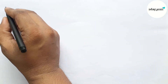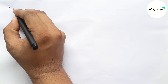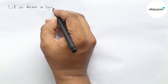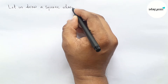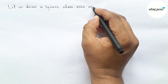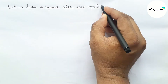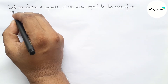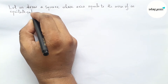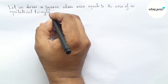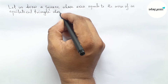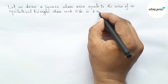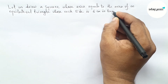Hi everyone, welcome to Essay Share Classes. Today in this video, let us draw a square whose area equals the area of an equilateral triangle whose each side is 6 centimeters in length, in an easy way. Please watch the video till the end. Let's start.